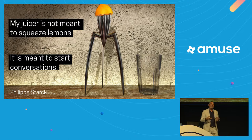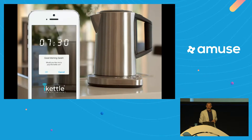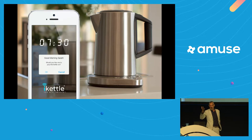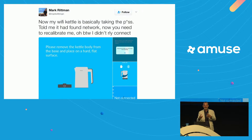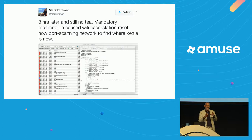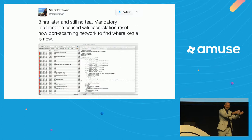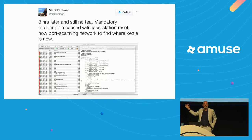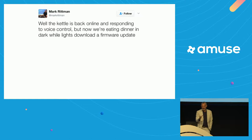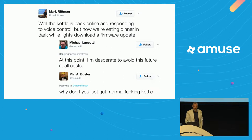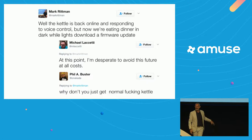The modern kitchen is full of stuff like this. Here's a Wi-Fi enabled kettle. A gentleman named Mark Ritman in the UK owns one and tried to make a cup of tea, but the kettle encountered network trouble and asked to be recalibrated. Three hours later it had sabotaged his Wi-Fi router. Ten hours later he got the kettle back online and was enjoying his tea — but then his smart lights cut out because they needed a firmware upgrade. The internet was not entirely sympathetic.